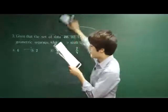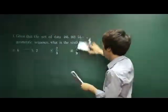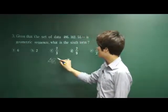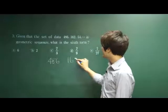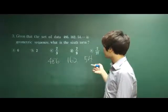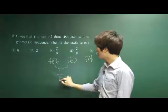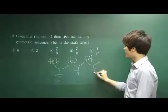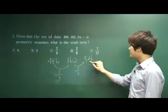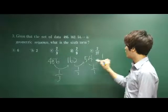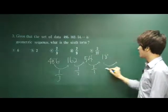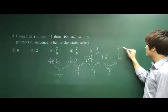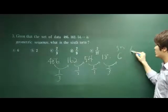Let's move on to number 3. Given that the set of data is a geometric sequence, what is the 6th term? Let's rewrite this: 486, 162, and 54. It divides by 1 over 3 - it decreases by 1 over 3. Therefore, let's just do it. Divide this by 3, we get 18. Divide by 3, we get 6. This is 1, 2, 3, 4, 5.